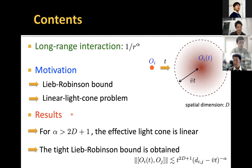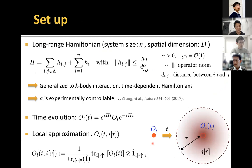This is a rough description of our results. First, if alpha is larger than 2d plus 1 — where d is the spatial dimension — then the effective light cone is proved to be linear with time. Also, we proved that this condition is tight. In other words, we give the tight Lieb-Robinson bound, and the rough form is given by this inequality.